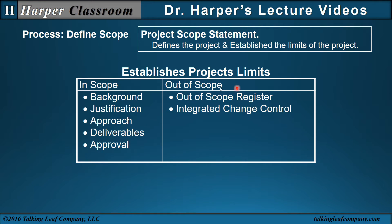The in-scope and out-of-scope establishes the project limit. The in-scope can contain the background, justification, approach, deliverables, and approval. The out-of-scope can contain the out-of-scope register, which lists the items that are not in scope, along with the cost, time, and resource requirements for each item. And the integrated change control, which will establish how the out-of-scope items will be managed during a project.